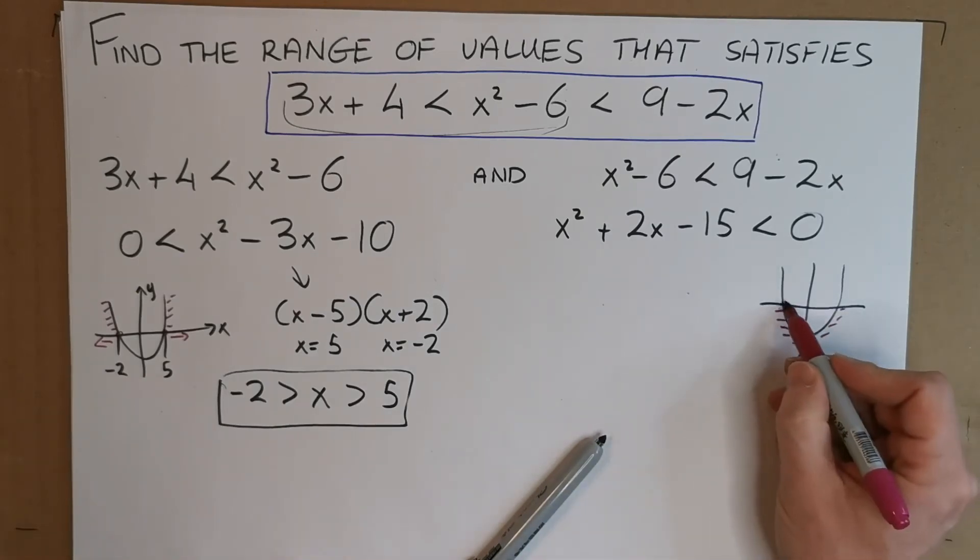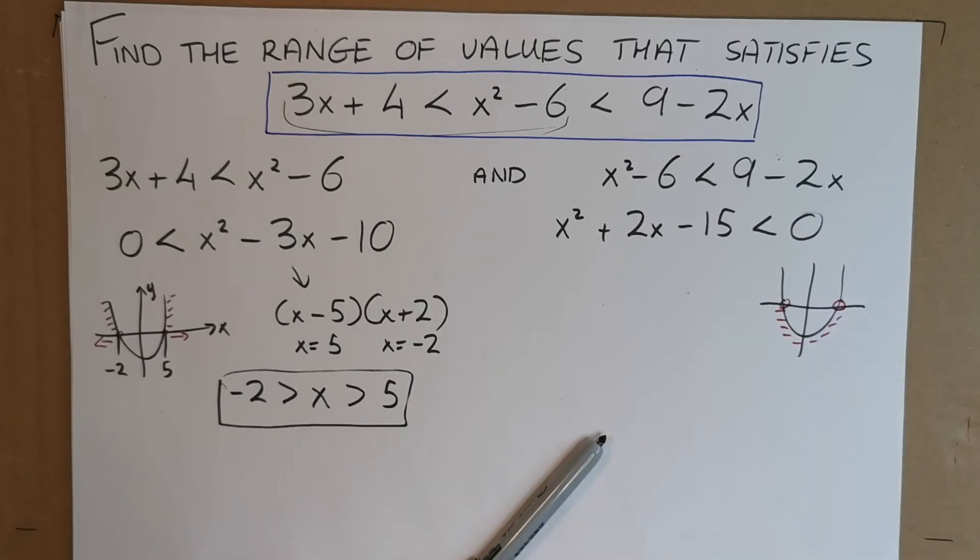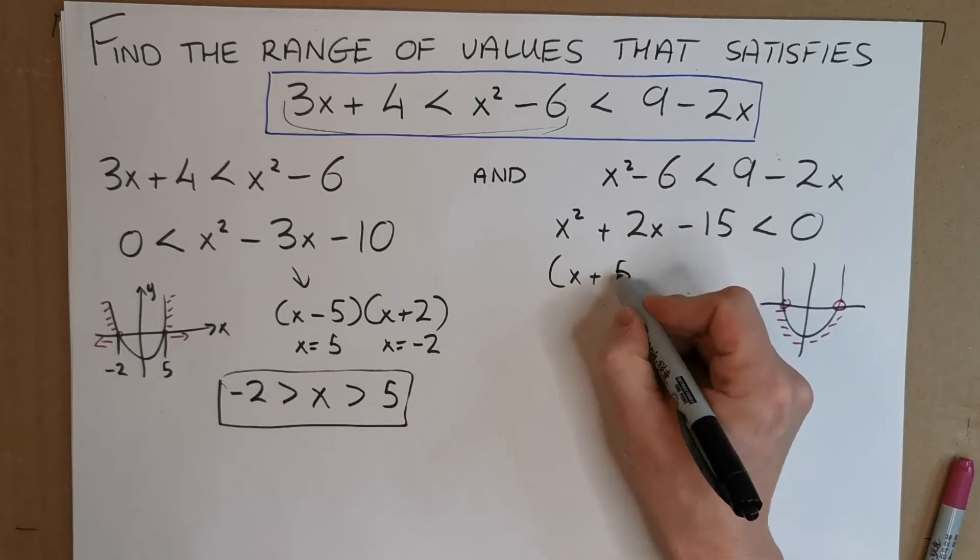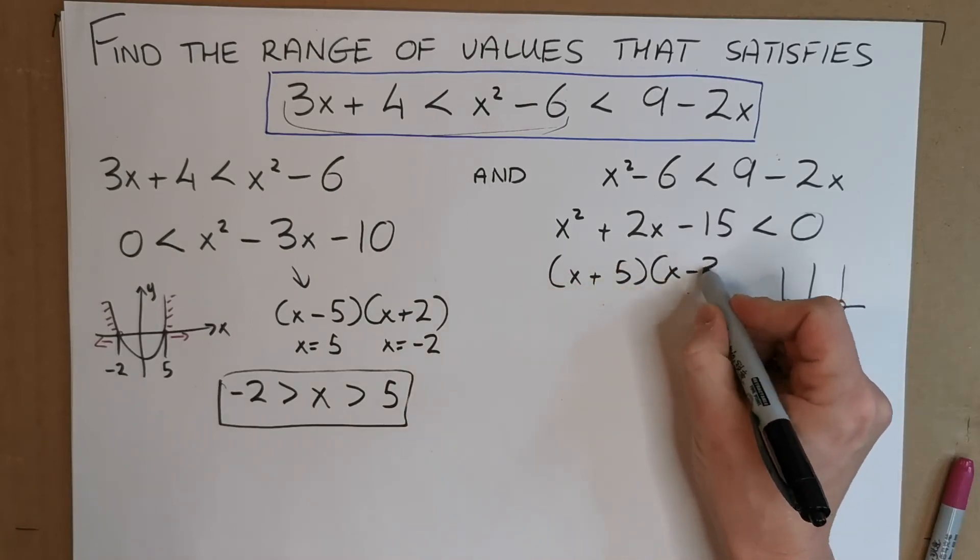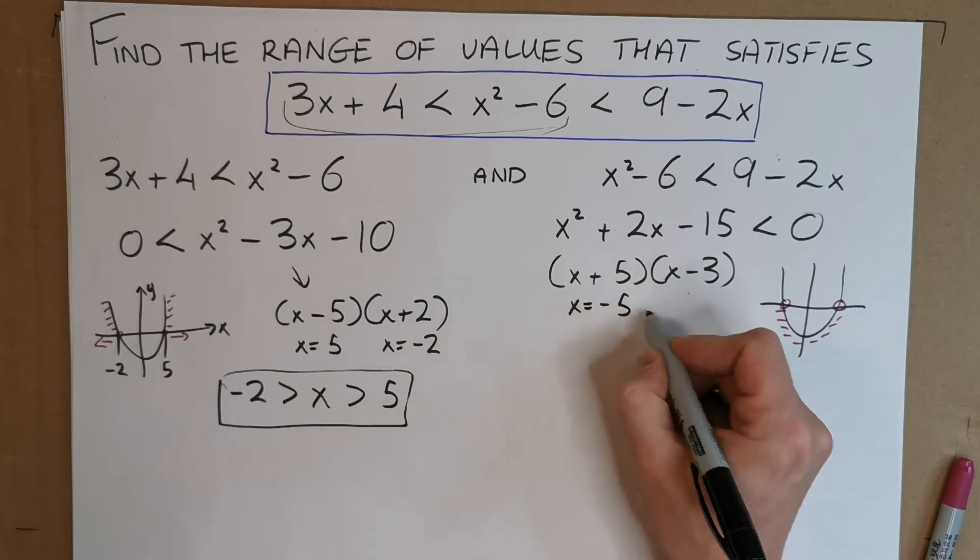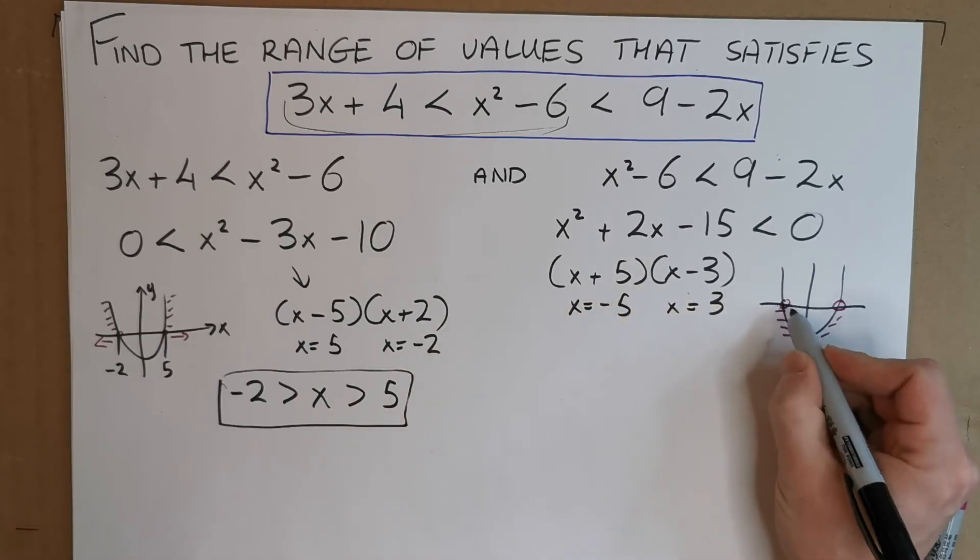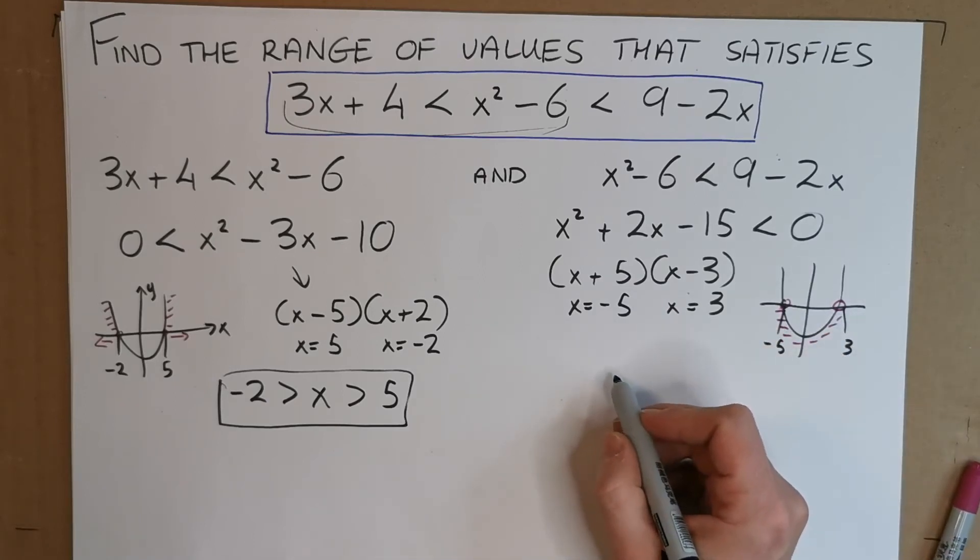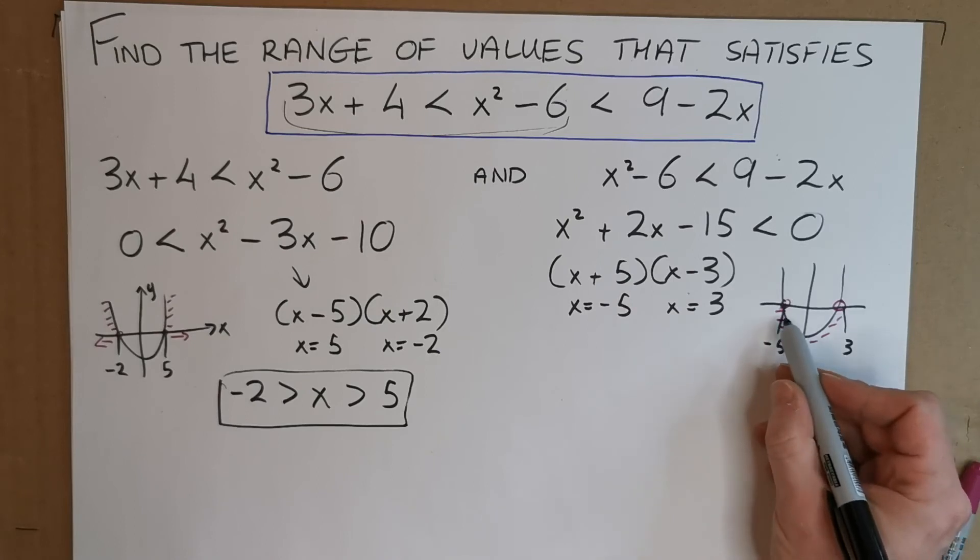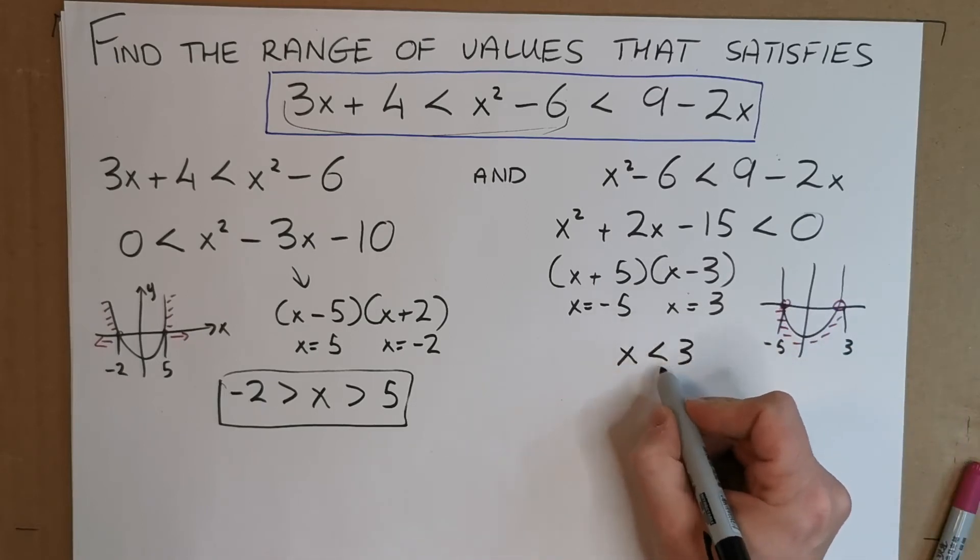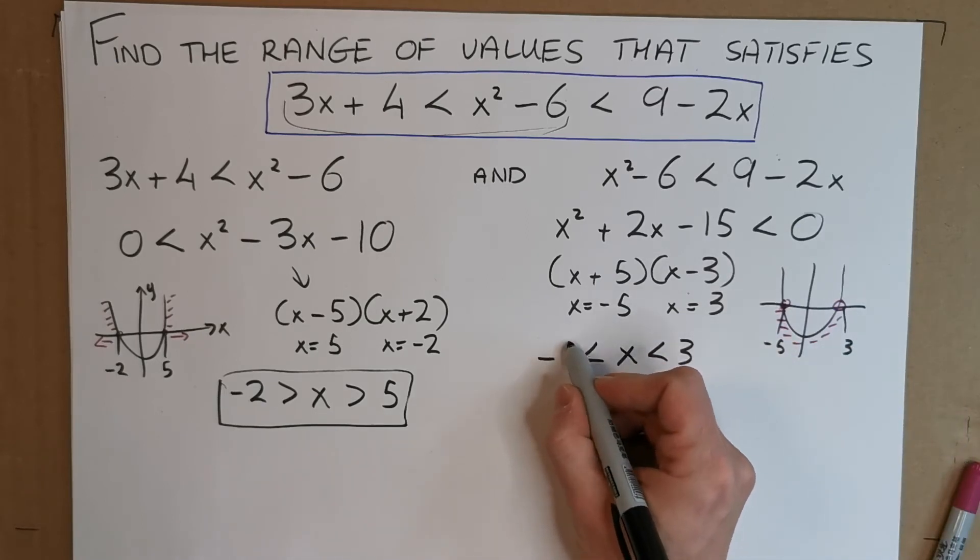So again, we're looking for this point here and this point here, which are the roots. So let's factorize it to get those. So x plus 5 and x minus 3. So we have x is equal to minus 5 or x is equal to plus 3. So that's this point here must be the minus 5 and this point here must be the plus 3. So it looks like the solution set for this, it's in between minus 5 and 3 is this part of the graph that's below 0. So now when x is less than 3 and when x is greater than minus 5.